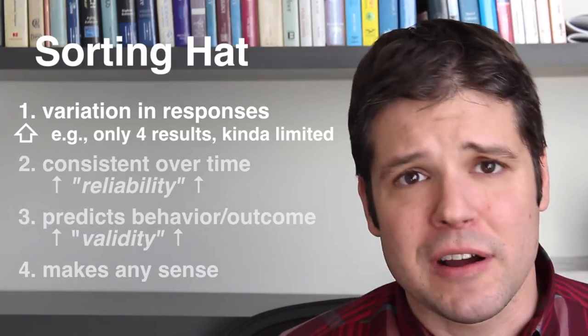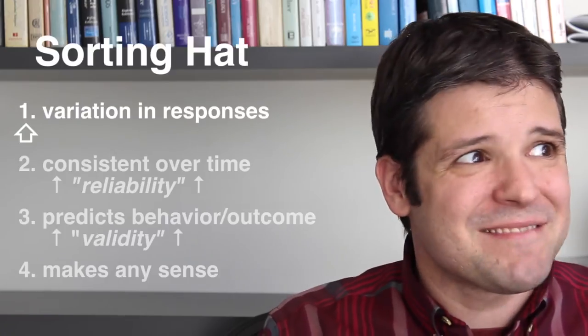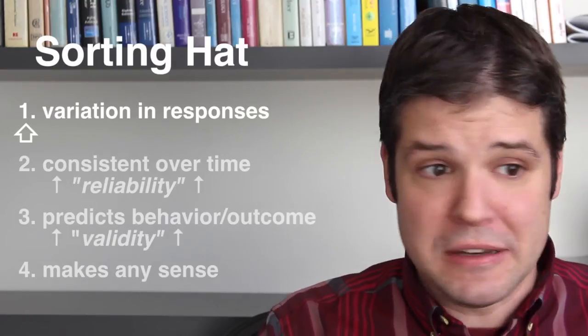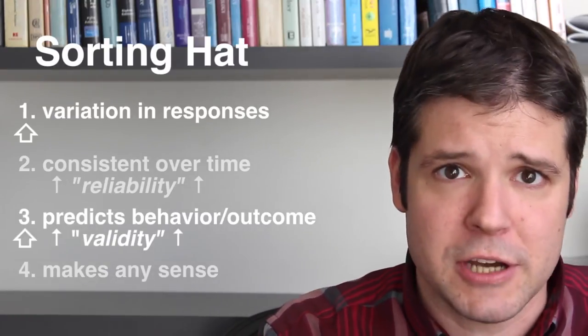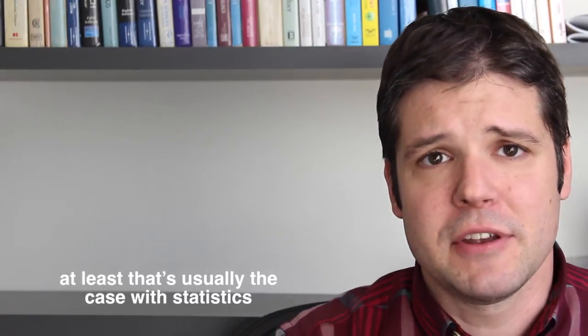Also, remember that the sorting hat is categorical. You can't be partially in one house and partially in another. This makes it harder to find relationships between your house and any other outcome. But this also means that the idea of being a Ravenclaw or a Hufflepuff might be more meaningful than these results suggest. If the test were tweaked slightly to give percentages as results, you'd probably find stronger relationships with the validated measures of personality.